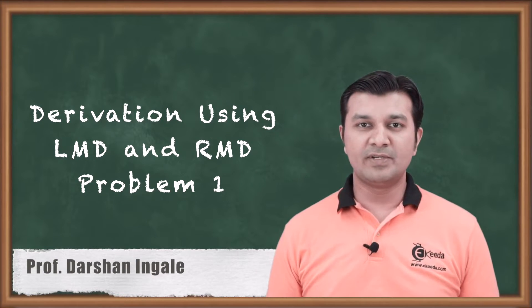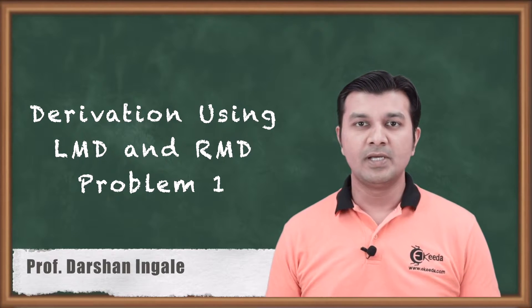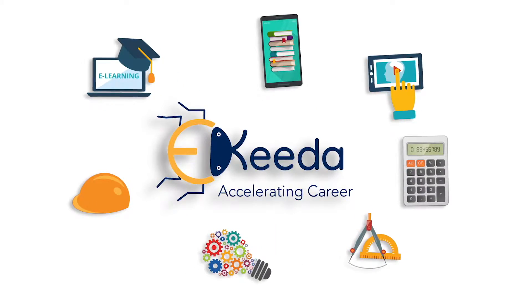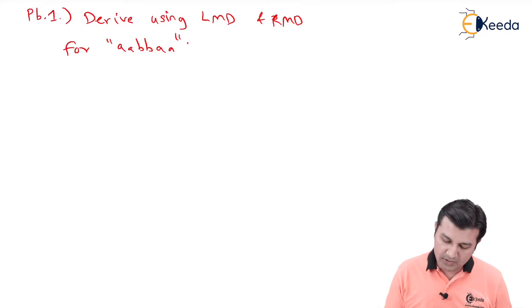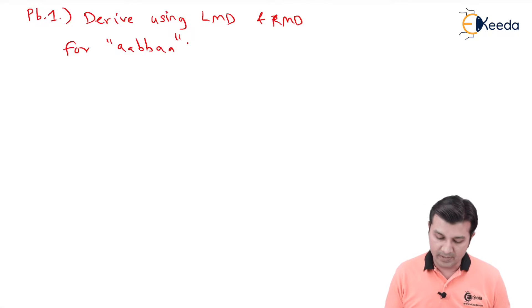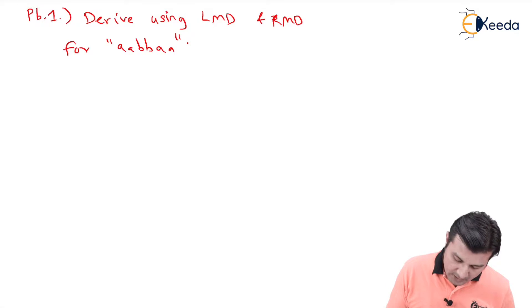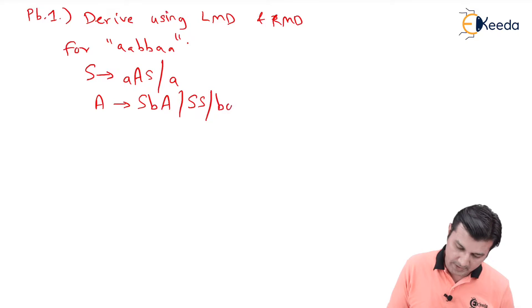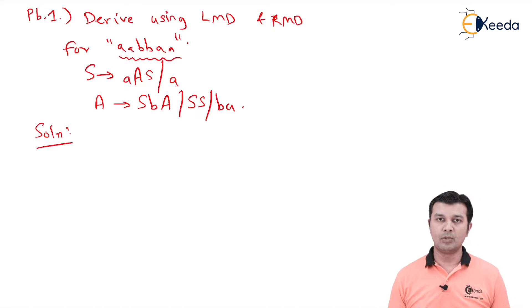Hello friends. Having seen the definition of derivation, leftmost derivation, and rightmost derivation, in this video we are going to solve a problem and understand its working. The question given says: derive using leftmost derivation (LMD) and rightmost derivation (RMD) for the string AABBAA. The productions given are: S → AAS | a, and A → SBA | S | BA.